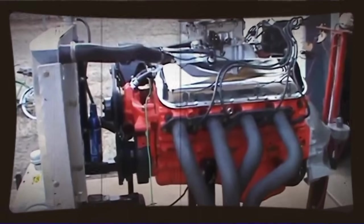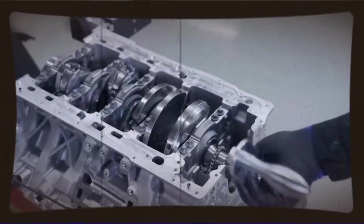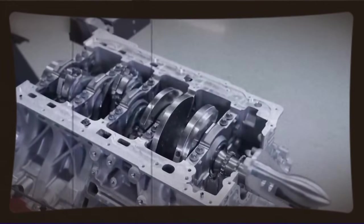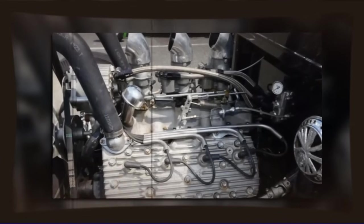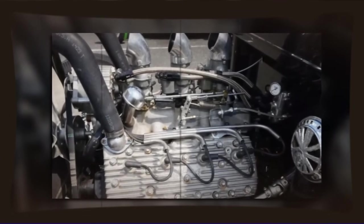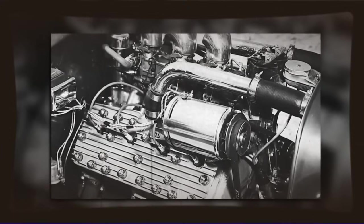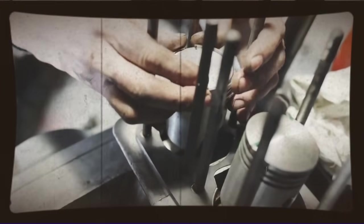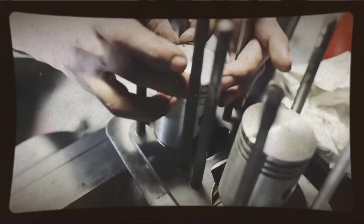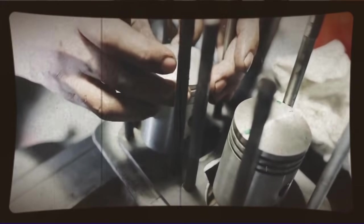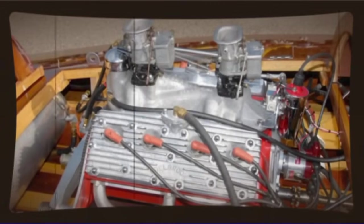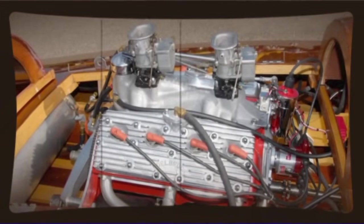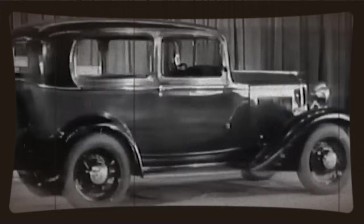It's worth noting that Ranto wasn't the only inventor working on two-stroke automobile engines during this period. The two-stroke versus four-stroke debate had been raging since the earliest days of internal combustion engines, and throughout the 1920s and 1930s, there were various attempts to make two-stroke designs work in automotive applications. Some companies, particularly in Europe, did produce two-stroke cars that sold in reasonable numbers. The DKW brand in Germany, for instance, became fairly successful with small two-stroke engines, and their designs influenced later vehicles like the Trabant that became iconic in East Germany.